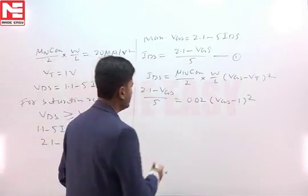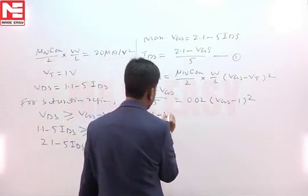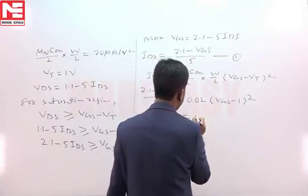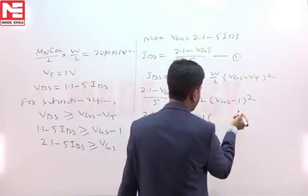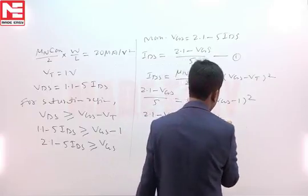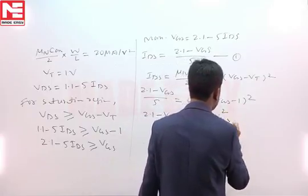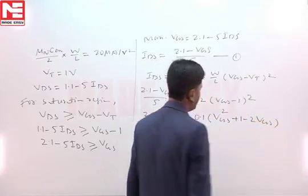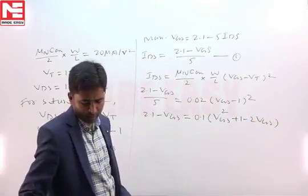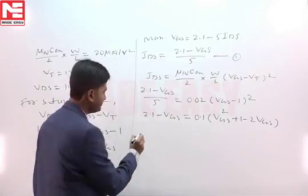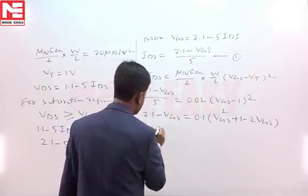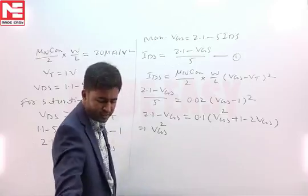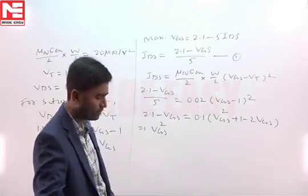Now, this you can simplify and bring this into quadratic form. 2.1 minus VGS equal to 5 brought here, it becomes 0.1 into A minus B whole square. If you expand that, it will become VGS square plus 1 minus 2 VGS. And if you simplify this further, it will come into the quadratic form VGS square plus 8 VGS minus 20 is equal to 0.